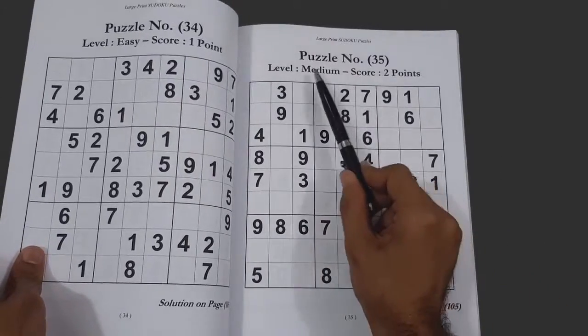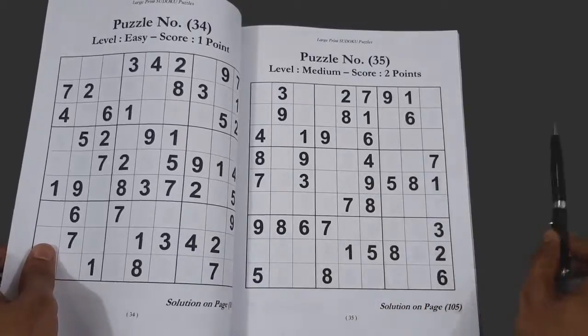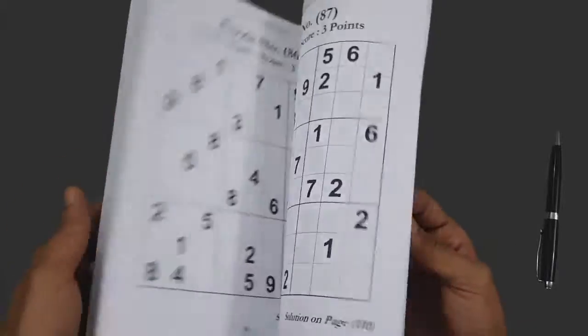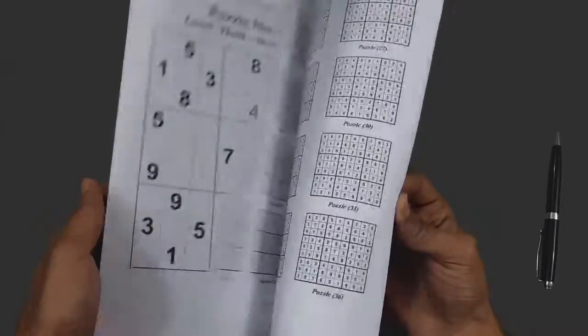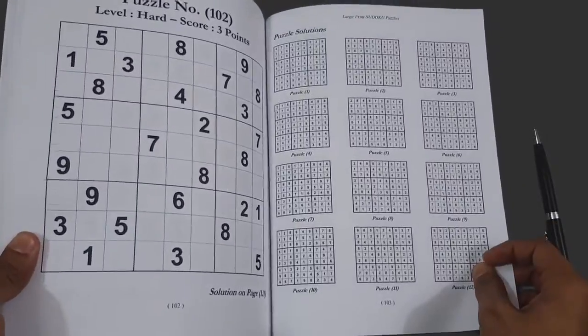Here we have moved to another difficulty of medium with a score of two points. You go through the book solving the puzzles, and then you can check for the correct answer at the end in the solutions.